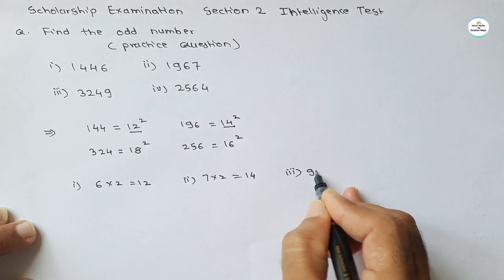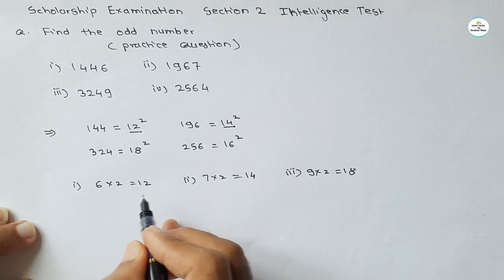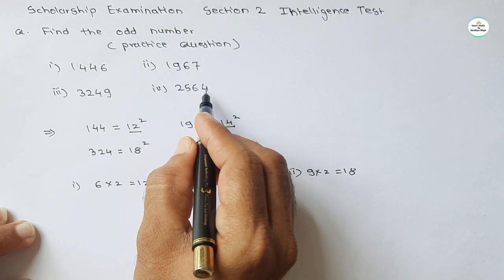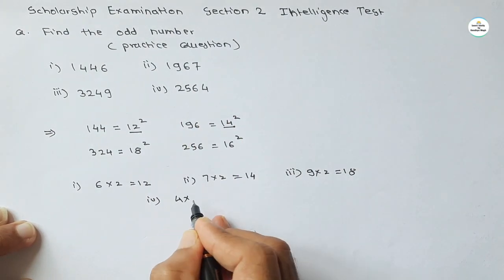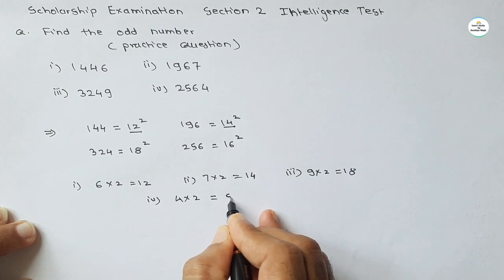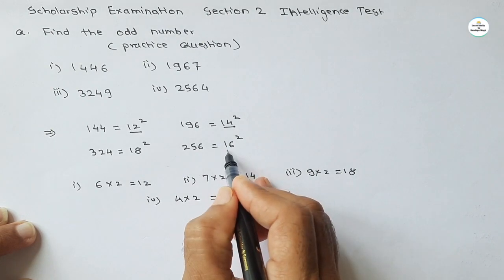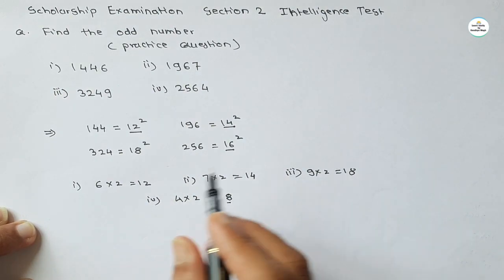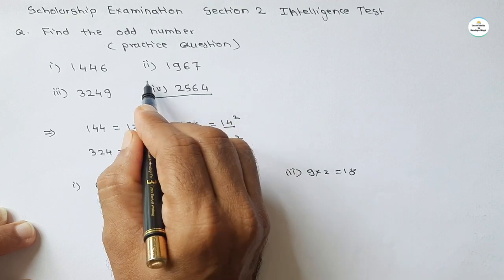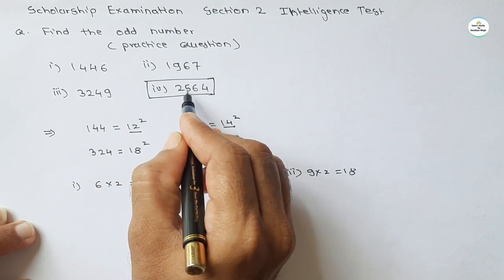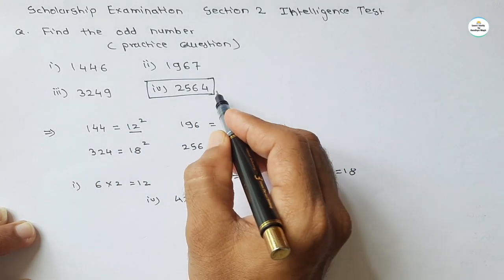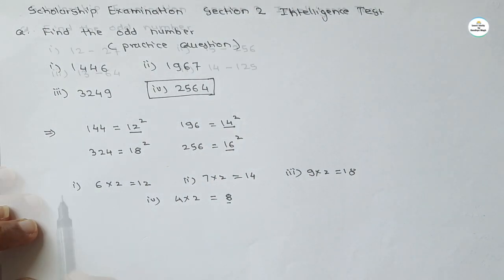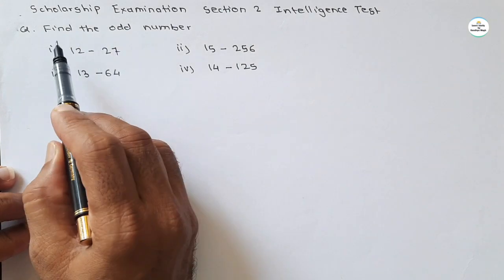For the last number 256, the last digit is 4 — but 4 multiplied by 2 gives 8, which does not match the square root 16. So this relation does not hold for 256. All three numbers share the same relation except 256, so the odd number is 256. Now let's see the question for this video.